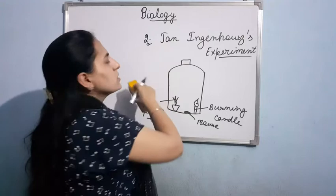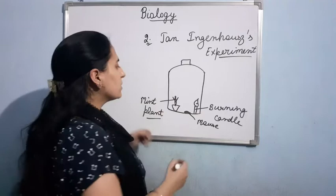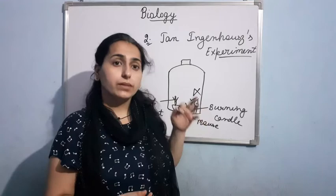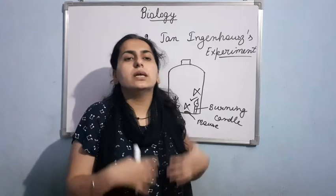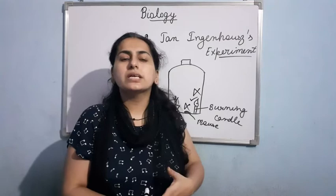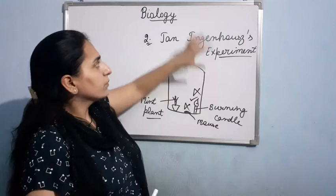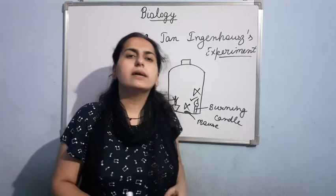What he did next — he placed this setup in a dark room. There is no sunlight, and as a result there will be no photosynthesis. When he placed this setup in the dark room, he observed that the burning candle got extinguished and the mouse died. Although the mint plant is there, but still the candle got extinguished and the mouse died. Because the plant is there but not able to restore the oxygen, since sunlight is not there. So basically, Jan Ingenhousz did this experiment to show that light is necessary for the process of photosynthesis.